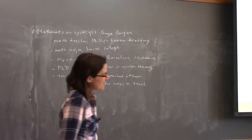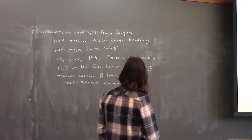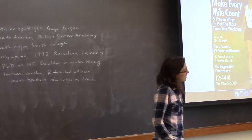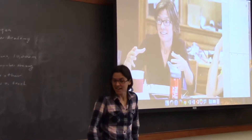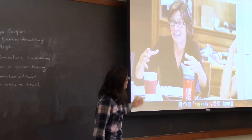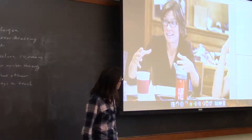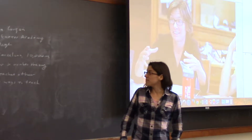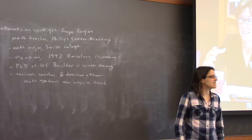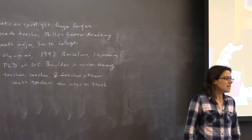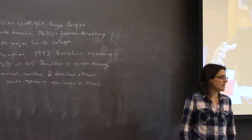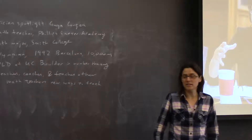Today our mathematician spotlight is Gwen Coogan, one of my best friends. Here's what Gwen looks like now. She's currently a math teacher at Phillips Exeter Academy — here she is in her classroom doing her math teacher thing. She was a math major at Smith College, a small liberal arts college much like Swarthmore, and then she got a job in Boston doing something mathematical.